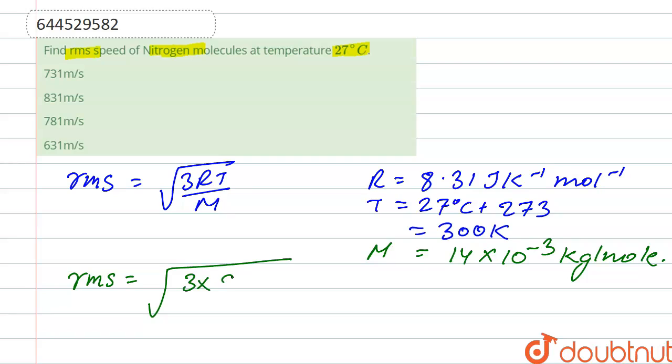14 × 10^-3). After solving this, the value is approximately 730.89 meters per second